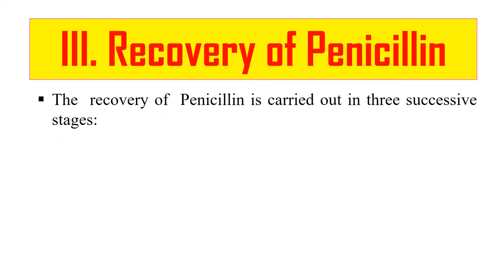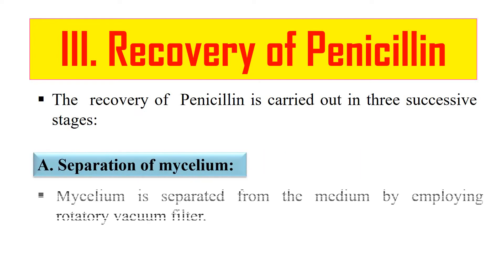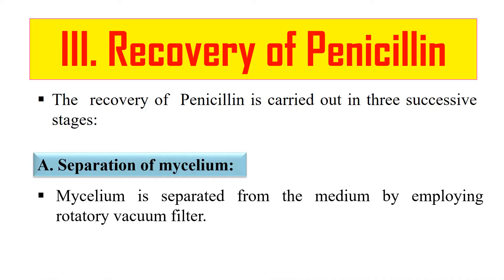The recovery of Penicillin involves 3 successive steps: first, separation of mycelium; second, extraction of Penicillin; and third, treatment of the Crude extract. In the first step, the fungal mycelium is separated from the medium using a Rotary Vacuum Filter. This is performed very carefully to avoid contamination by microorganisms that may produce the Penicillinase enzyme, which could ultimately degrade the Penicillin.